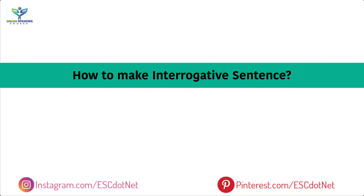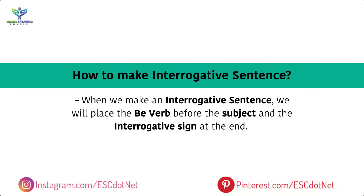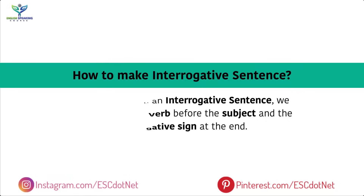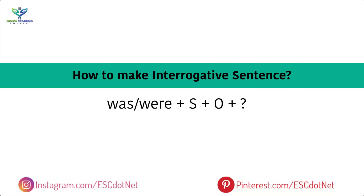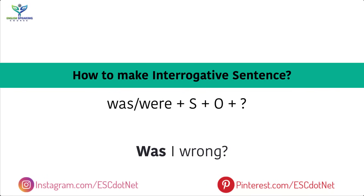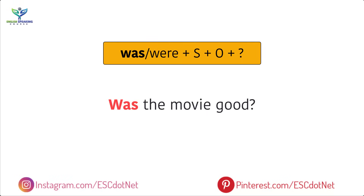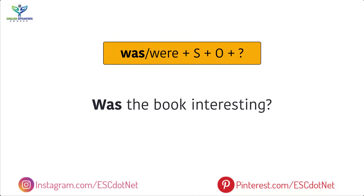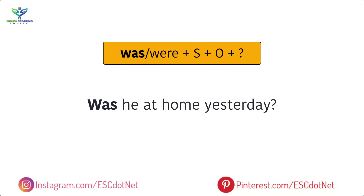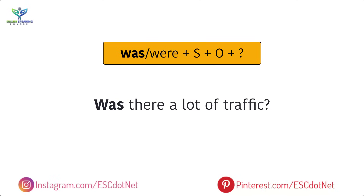How to make an interrogative sentence? When we make an interrogative sentence, we place the be verb before the subject and put an interrogative sign at the end. Structure: Was/Were + subject + object + ? For example: Was I wrong? Was the movie good? Was the book interesting? Was he at home yesterday? Was there a lot of traffic?